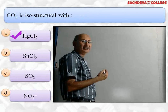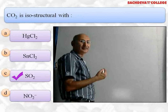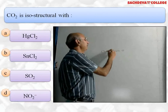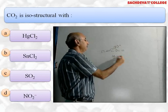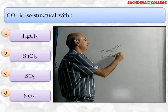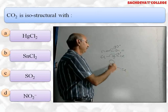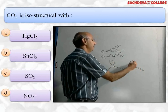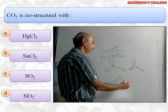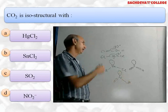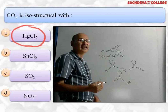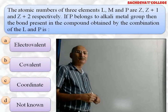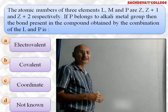Next question: CO₂ is isostructural with (a) HgCl₂, (b) SnCl₂, (c) SO₂, or (d) NO₂⁻? The correct answer is (a) HgCl₂. Carbon dioxide has a linear shape with bond angle 180°, and similarly HgCl₂ also has a linear shape with bond angle 180°. SnCl₂ is a bent molecule due to one lone pair. SO₂ is also bent due to a lone pair, and NO₂⁻ is bent with a lone pair. Isostructure means same structure — both CO₂ and HgCl₂ are linear.